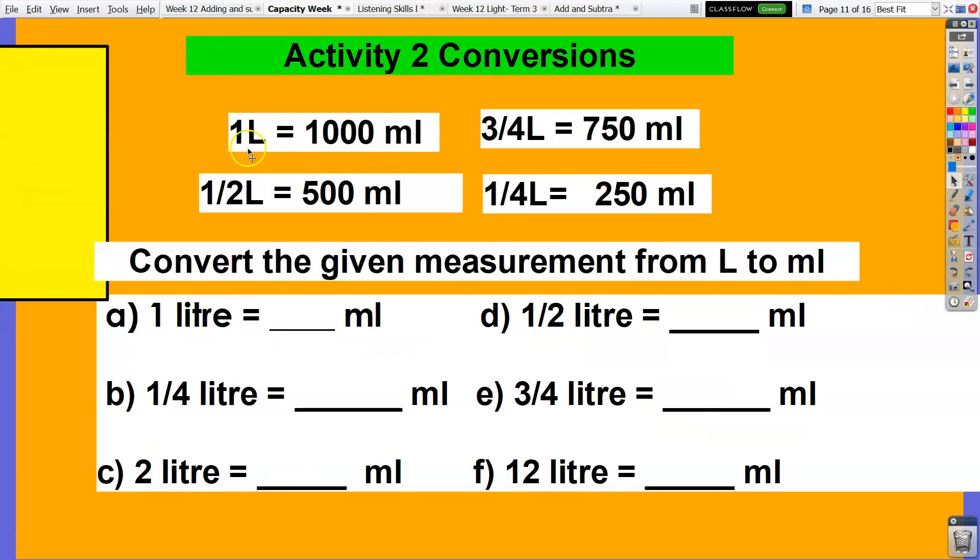For every one liter is equal to 1000 ml, half a liter or one half is equal to 500 ml, three-fourth liter is equal to 750 ml, and a one-fourth or quarter liter is equal to 250 ml.